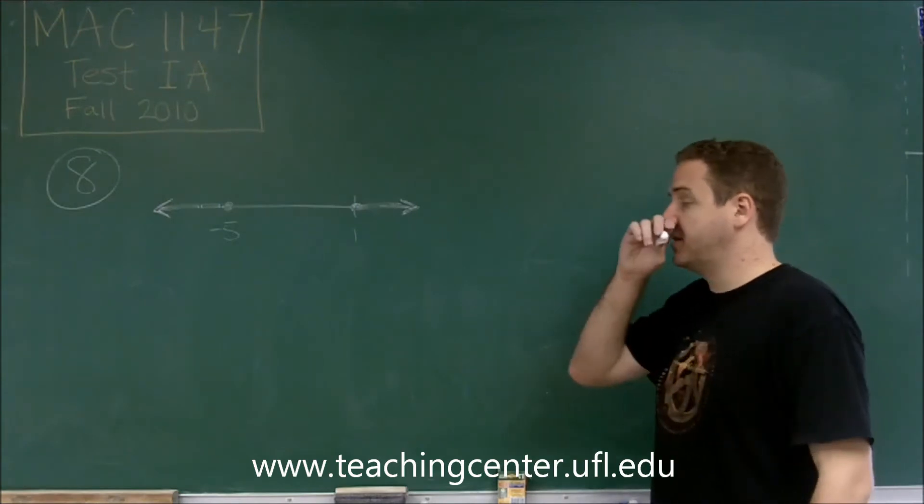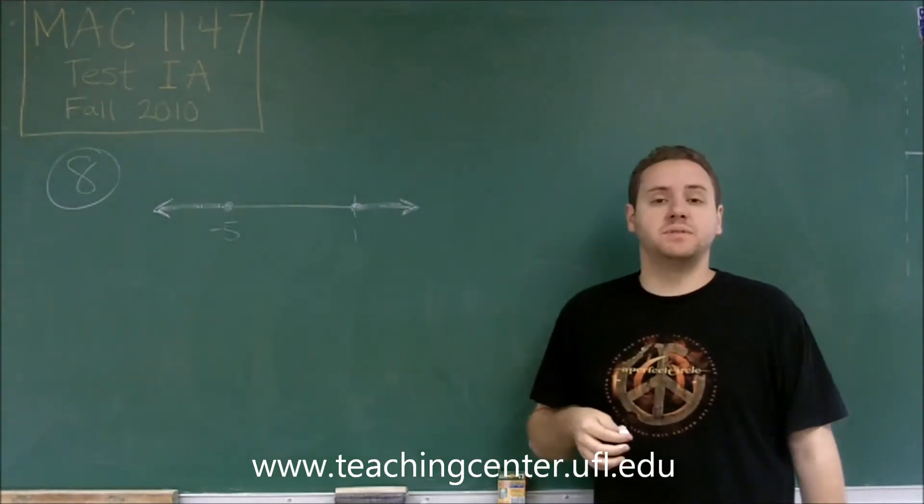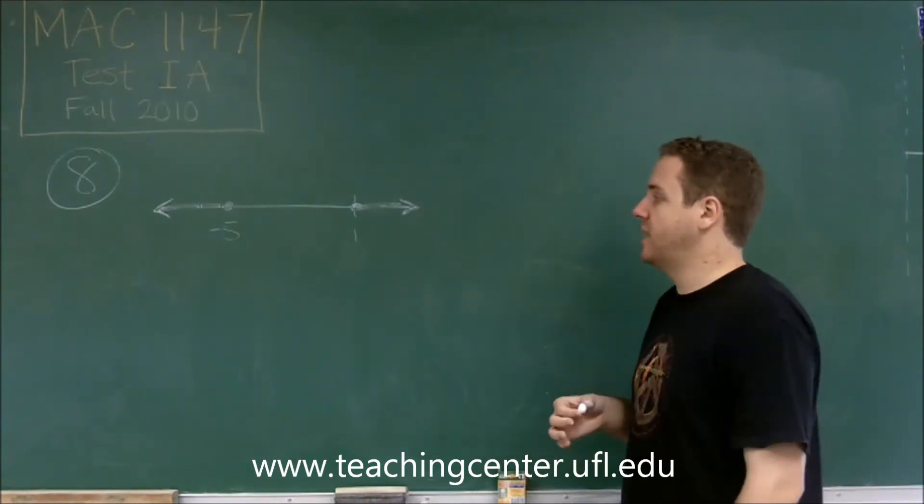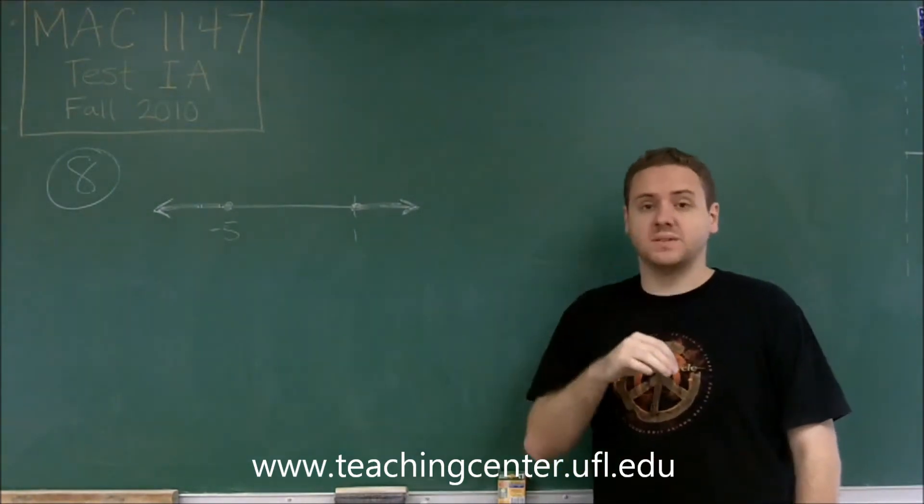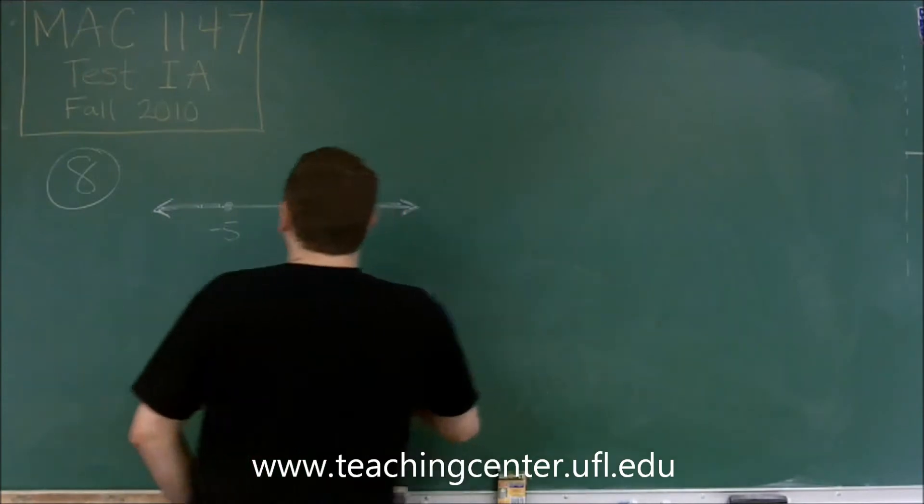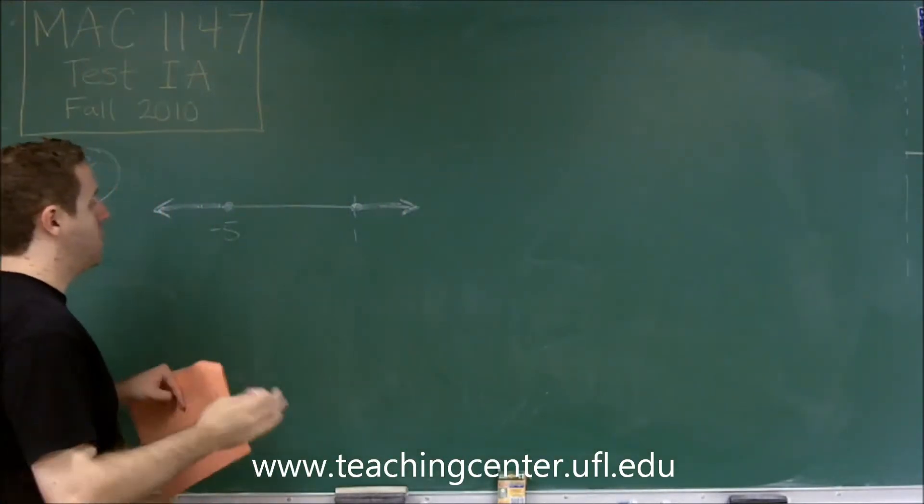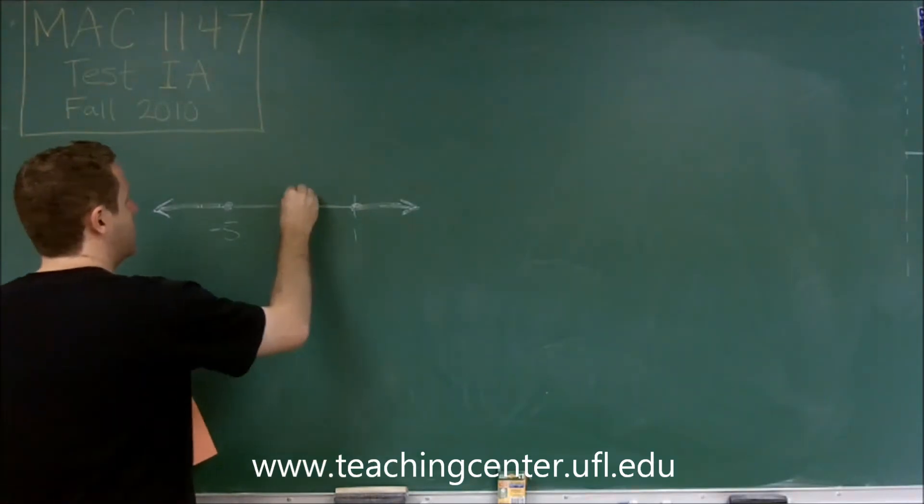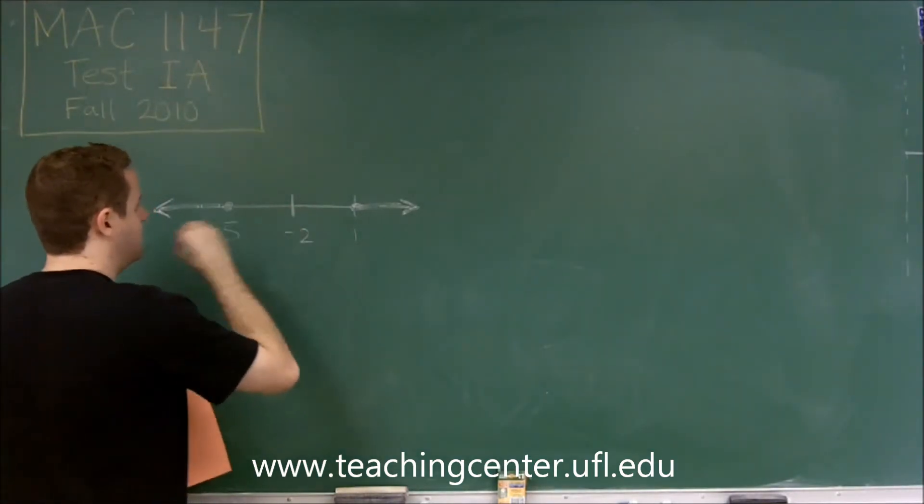Whenever you see an interval like this on a number line and you need to write absolute value notation, your prime objective should be to find the middle of the numbers given to you. We have negative 5 and 1, which are 6 apart. The middle number would be 3 from either one, which is the point negative 2.